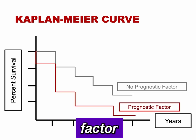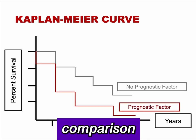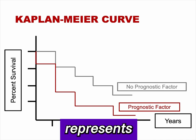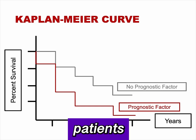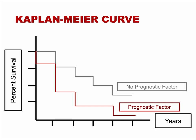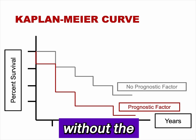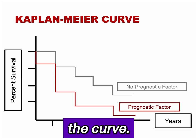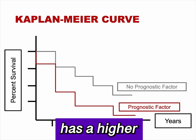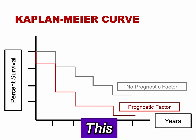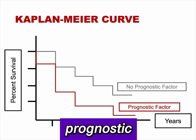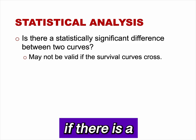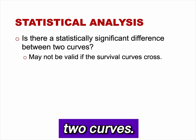More than one prognostic factor or intervention can be plotted for comparison on a Kaplan-Meier survival curve. In this example, the red curve represents survival in patients with a prognostic factor, and the gray curve represents survival in patients without the prognostic factor. The gray curve has a larger area under the curve — that is, it has higher survival over time than the red curve — indicating greater survival in those without the prognostic factor.